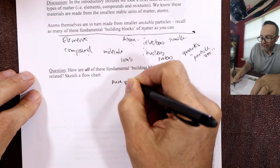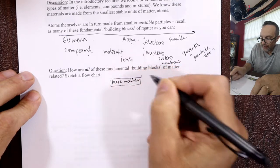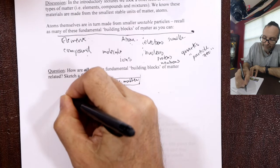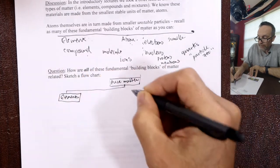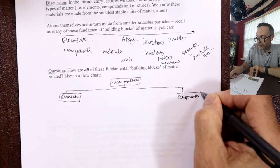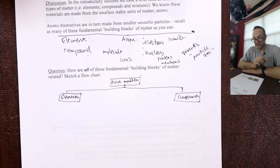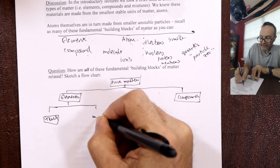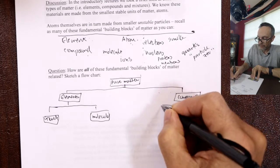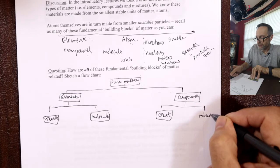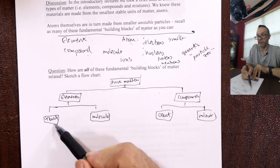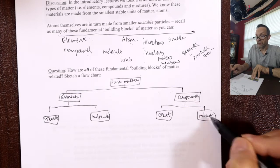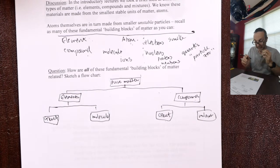If I have pure matter — anything with a formula — I can map it. I'm going to have elements and compounds. Before, we had giant elements and molecular elements; similarly, giant and molecular compounds. A giant element might be gold or diamond. A molecular element might be nitrogen, N2, or O2. A giant compound is NaCl, table salt. A molecular compound is H2O, for example. Giant is big, molecular is small.